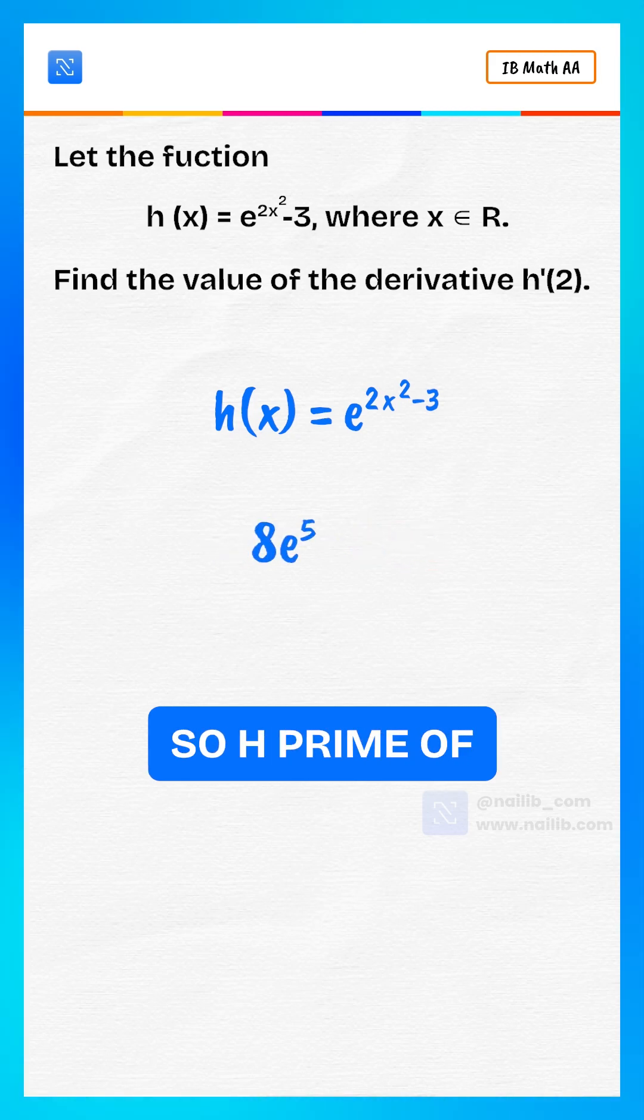So, h prime of 2 equals 8 multiplied by e to the power of 5. Follow for more IB Math AA tricks in 1 minute.